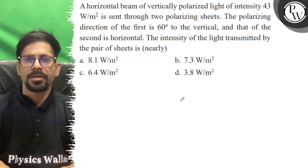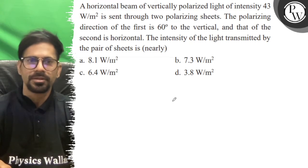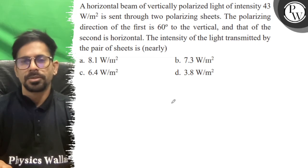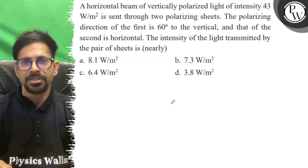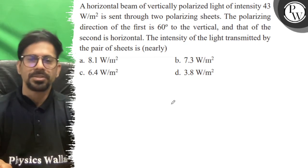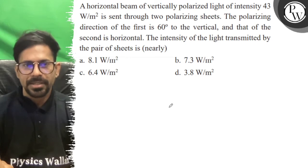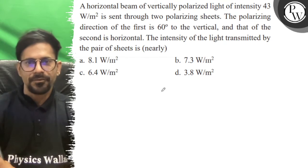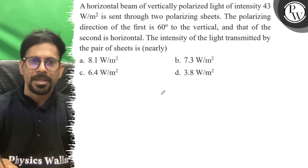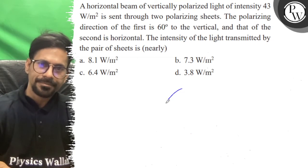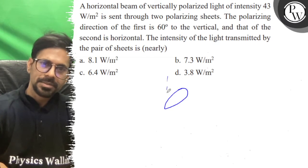Let's see the question. A horizontal beam of vertically polarized light of intensity 43 watts per meter squared is sent through two polarizing sheets. The polarizing direction of the first is 60 degrees to the vertical, and the second is horizontal. What is the intensity of light transmitted by the pair of sheets? The first sheet is at 60 degrees.